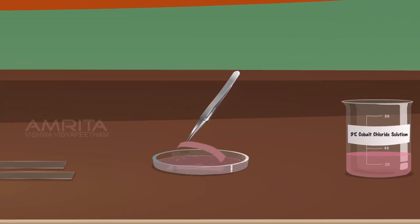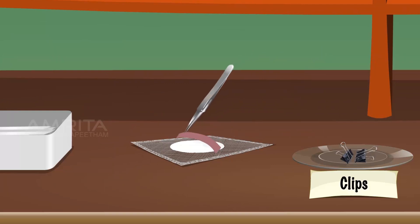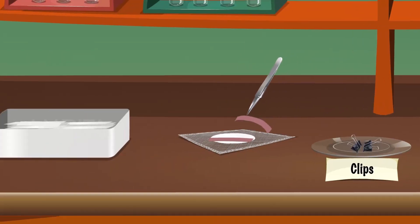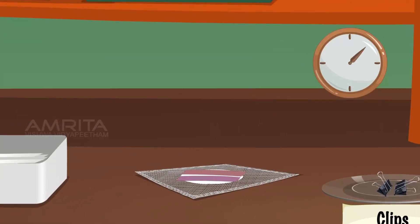Remove the strips from the solution using forceps. Place the strips on the wire gauze to allow them to dry. The filter paper then becomes blue in colour on drying.